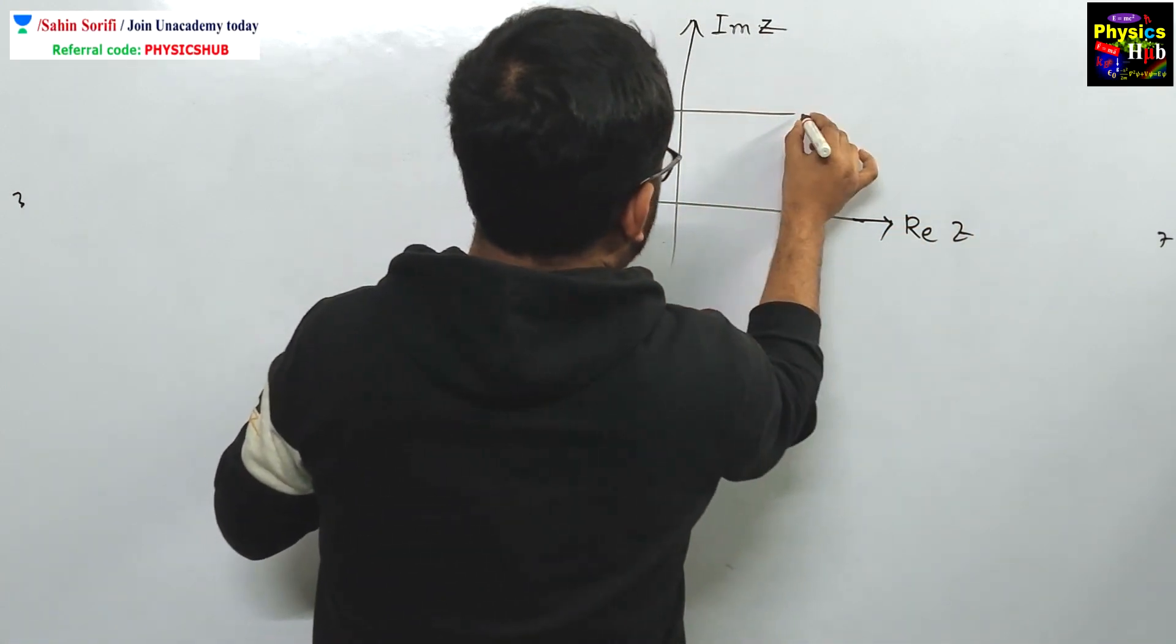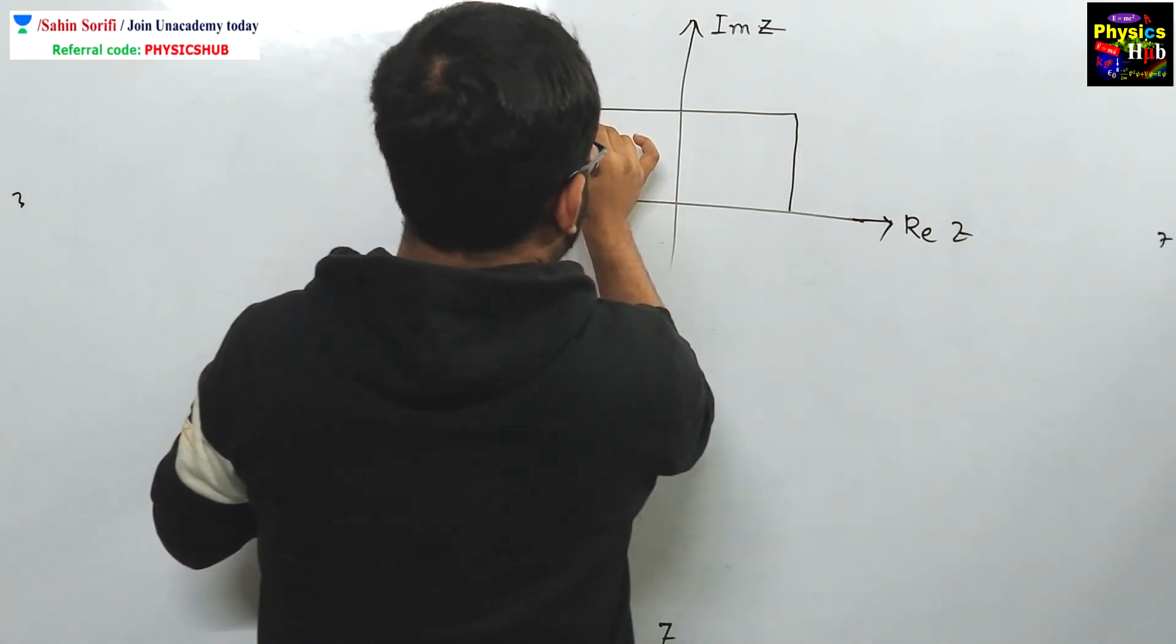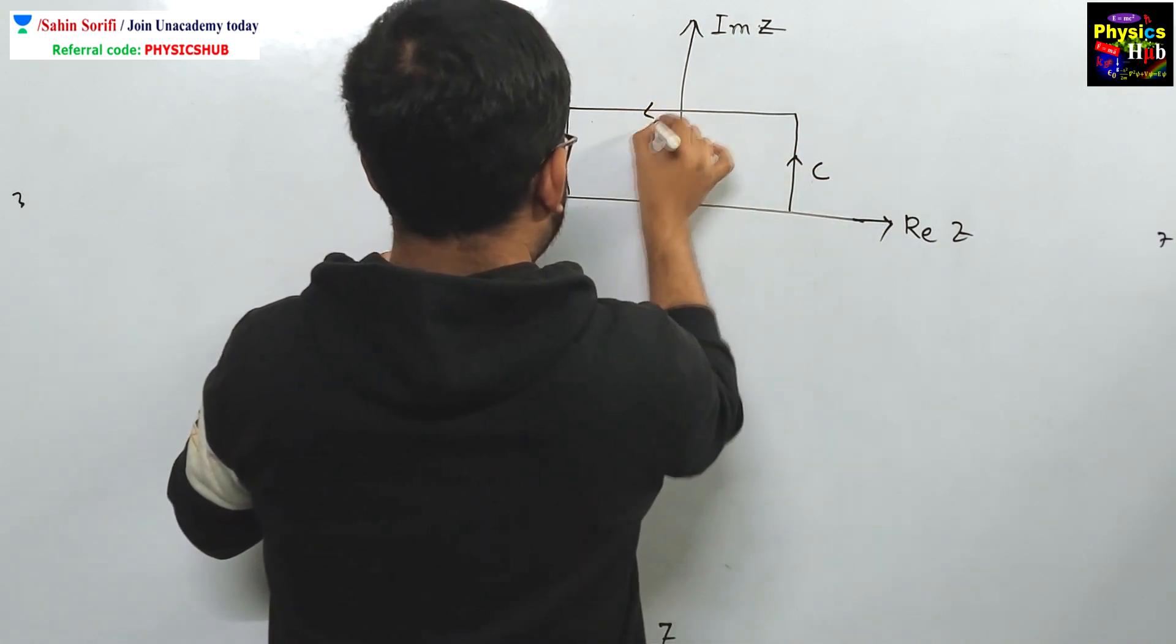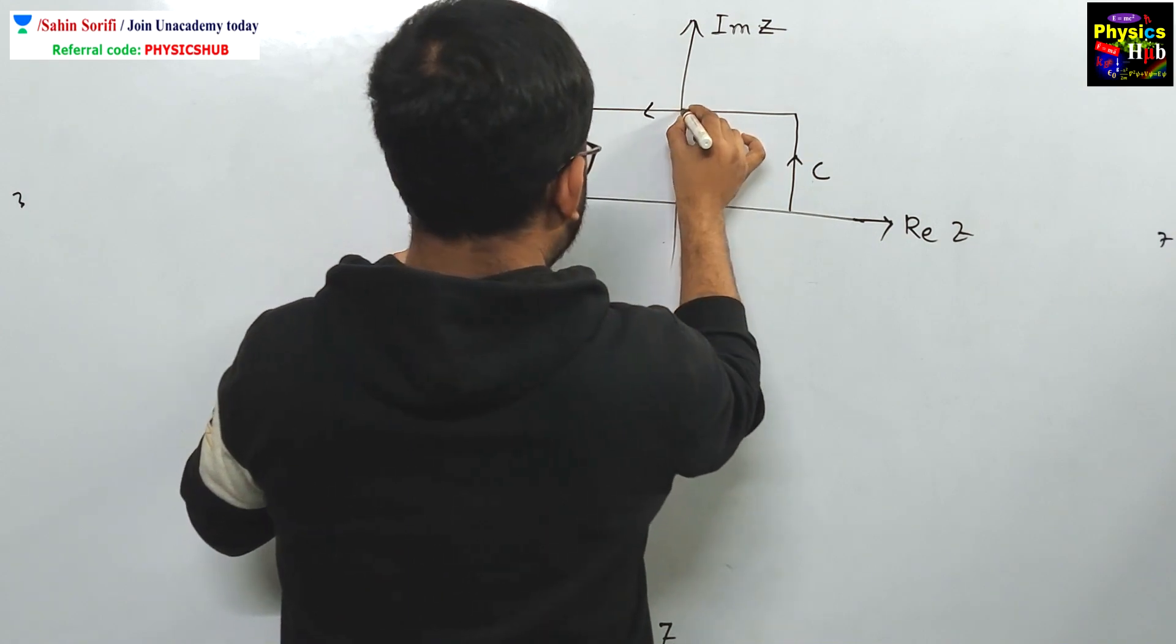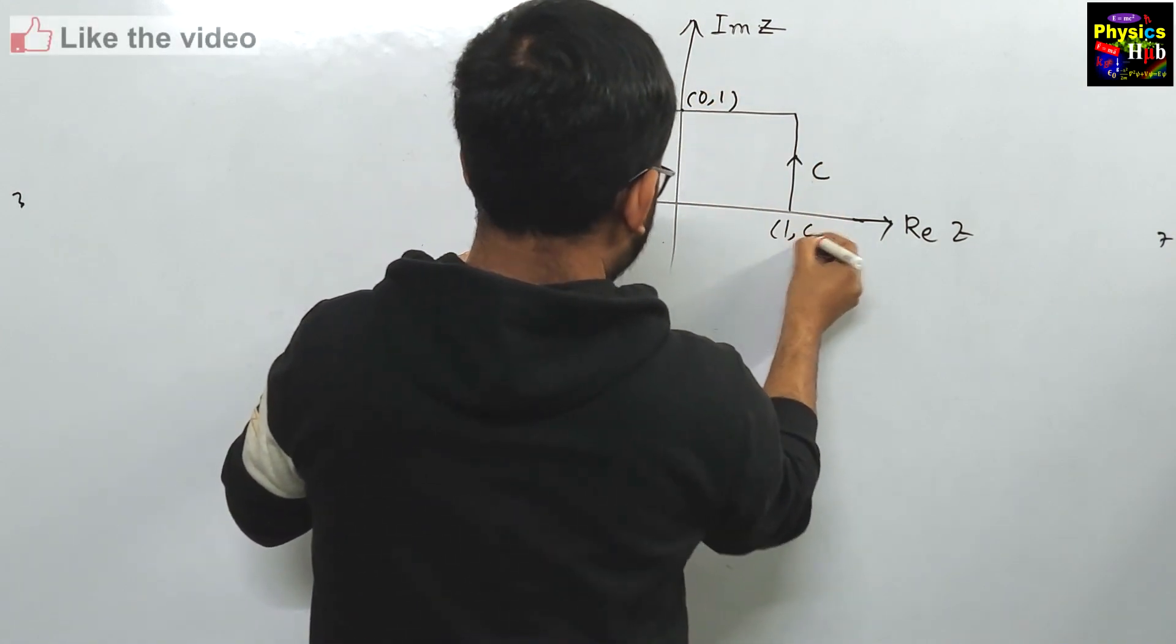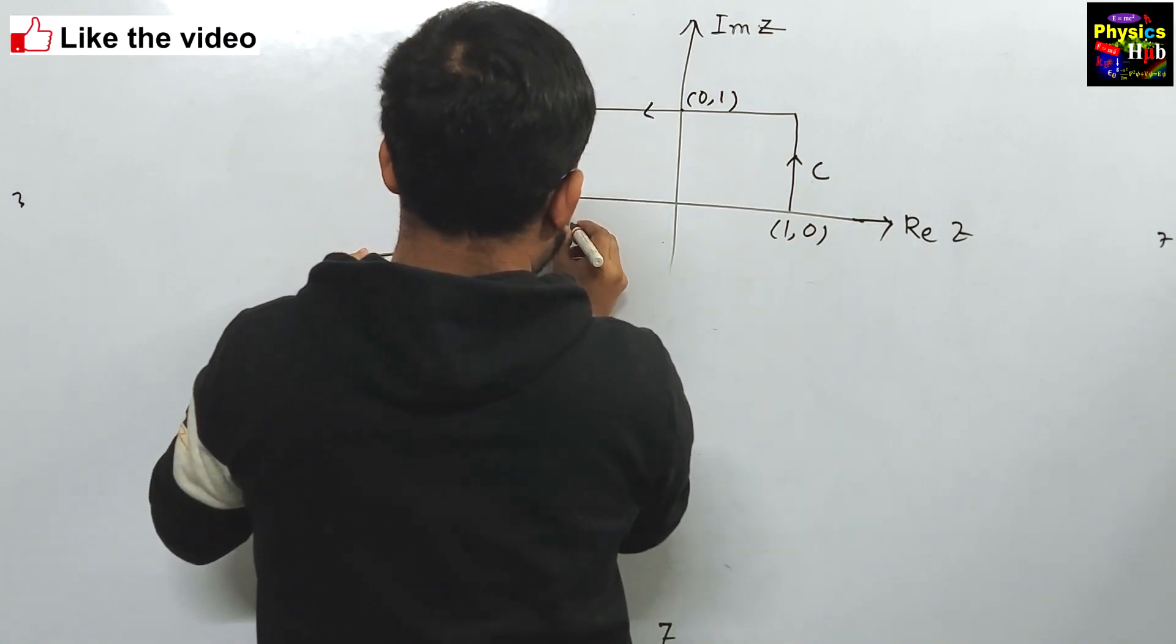You are given a rectangular contour. This is C, this rectangular solid line is C. This is (0,1) and this is (1,0), this is (-1,0).